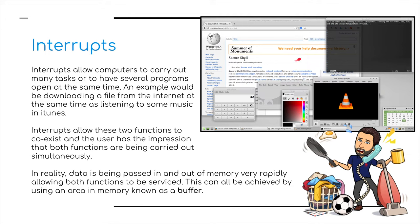Interrupts allow computers to carry out many tasks, or to have several programs open at the same time. An example would be downloading a file from the internet while at the same time listening to music in iTunes. Interrupts allow these two functions to coexist, and the user has the impression that both functions are being carried out simultaneously. But in reality, data is passed in and out of memory very, very rapidly, allowing both functions to be serviced. This can all be achieved by using an area of memory known as a buffer.